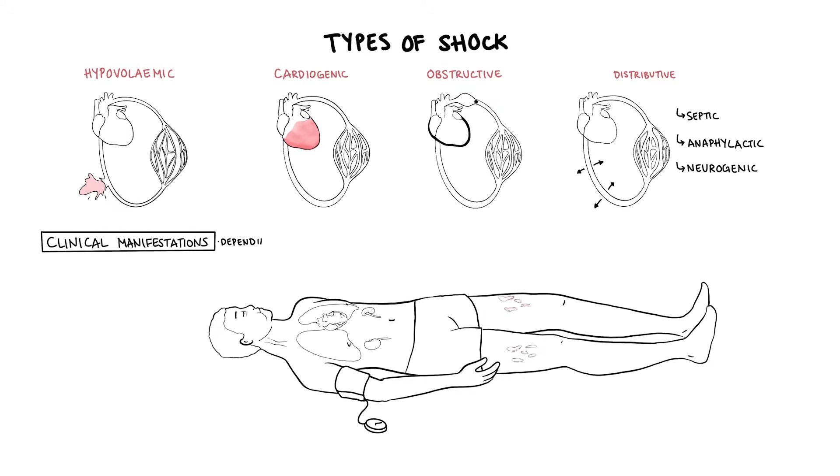Other features will depend on the type of shock. So for hypovolemic shock, you can have dry mucous membranes, a low jugular venous pressure. In cardiogenic shock, you can have chest pains. In septic shock, febrile and rigors. And in anaphylactic shock, angioedema and urticaria.